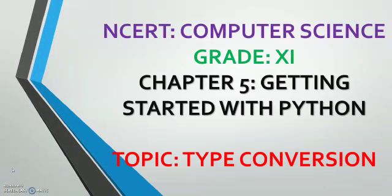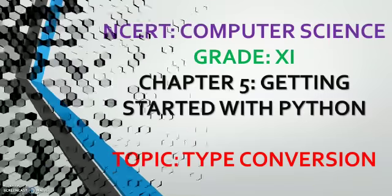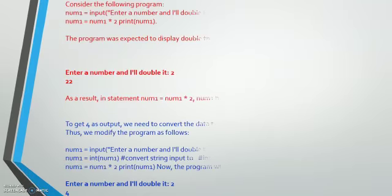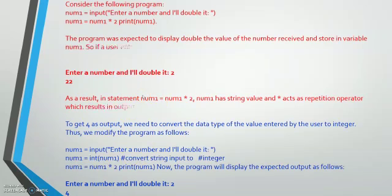Hello and welcome to the online classes for grade 11, from our NCERT book of computer science chapter number 5, getting started with Python. Today the subtopic we will discuss is type conversion — this means how the formats we have, such as string values, integers, float values, and doubles, can be converted when writing a program in Python.